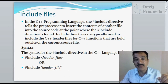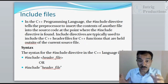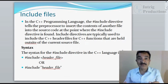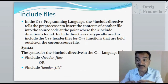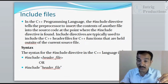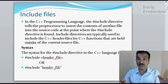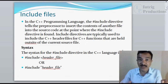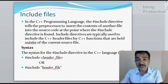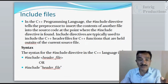In C++ programming, the hash include directive is a preprocessor directive. It tells the preprocessor to insert the content of another file — the file name you have given — into the source code at the point where the include directive is found. Include directives are typically used to include C++ header files for functions held outside of the current source file.